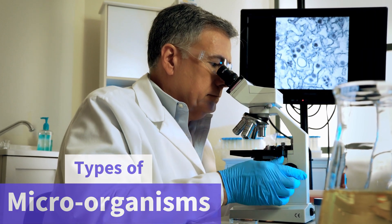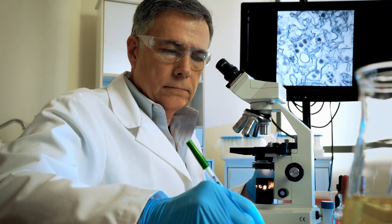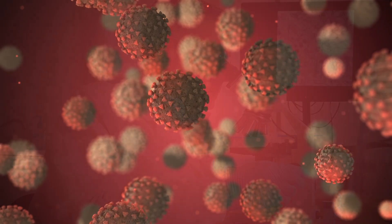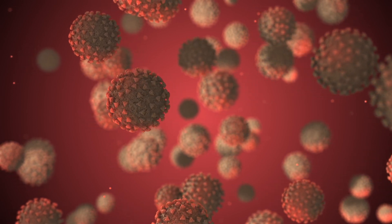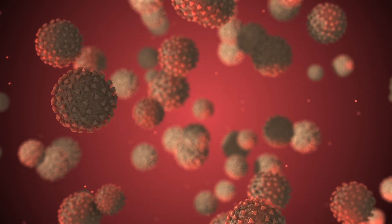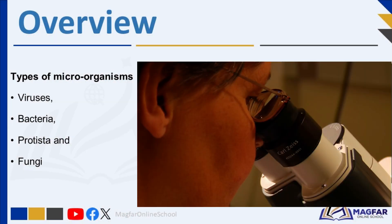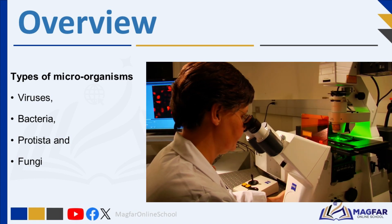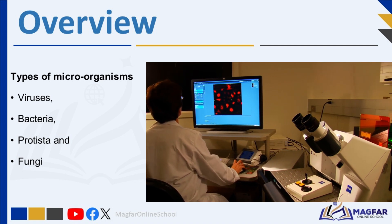Good day! Today we're going to explore the hidden world of microorganisms — tiny living things that are invisible to the naked eye and can only be seen with a microscope. Despite their size, they have a huge impact on our lives and the environment. There is a wide variety of microorganisms, each with unique characteristics and functions. Today we will explore four main types: viruses, bacteria, fungi, and protista.